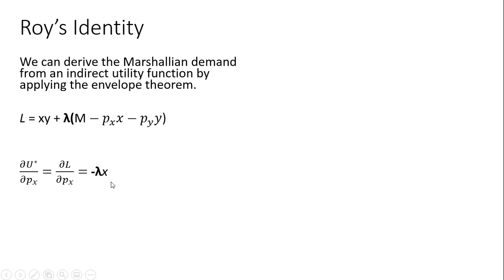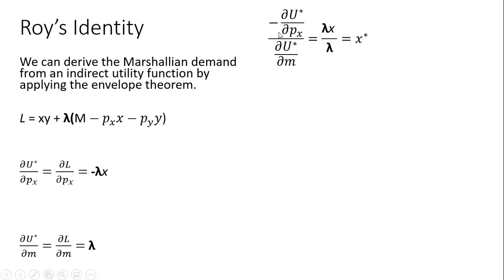That partial derivative would just be minus lambda times x. Notice that if you take the first result and divide it by the second result — the partial derivative of the indirect utility function with respect to income, which equals lambda — and remove the minus sign, you're left with x, the ordinary demand. So taking minus the partial of the indirect utility function with respect to the price of good x, divided by the partial with respect to income, simplifies down to x, the ordinary demand.